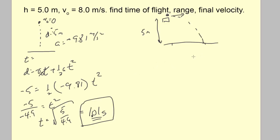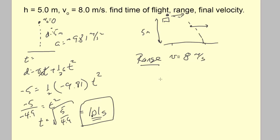The next thing is the range — how far does it move horizontally. Horizontally, the velocity is always 8 m/s. The horizontal component of velocity never changes, so it remains at 8 m/s throughout. The range is velocity times time in the air: 8 × 1 = 8 meters.